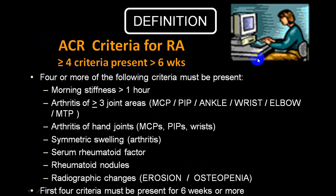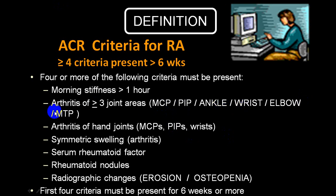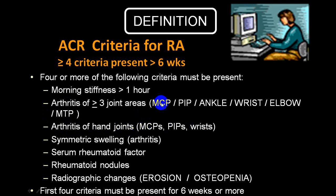For labeling a person as rheumatoid arthritis, at least four or more ACR criteria must be present for more than six weeks. These criteria include morning stiffness more than one hour, polyarticular arthritis with more than three joints involved — specifically metacarpophalangeal, proximal interphalangeal, ankle, wrist, elbow, and metatarsophalangeal joints. It is always symmetrical, and the most commonly involved joints are MCP, PIP, and wrist.